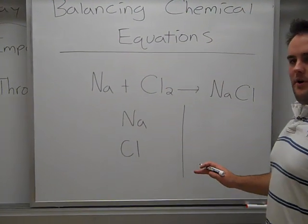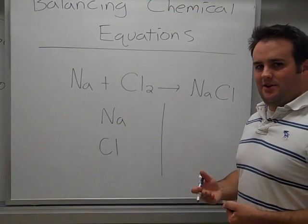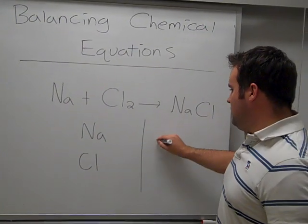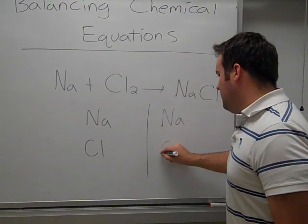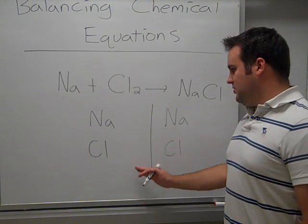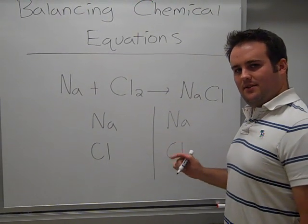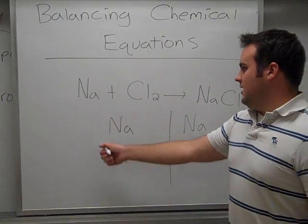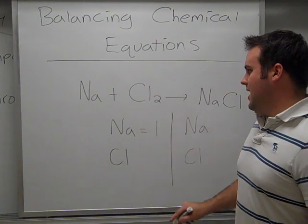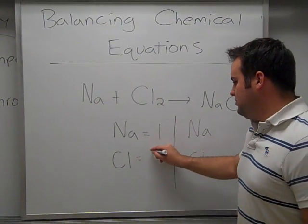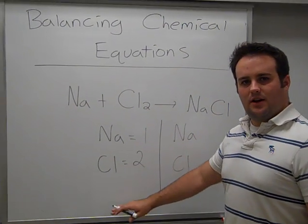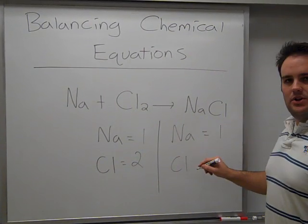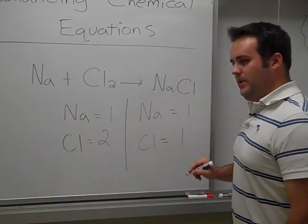Now, one tip for you: going back to that law of conservation of mass, matter can't be created nor destroyed. So whatever types of elements I have on the left side, you can sure bet that they will also be on the right side. Make sure you list them out in order. I'm going to count out how much of each element I have. We have one sodium atom and two chlorine atoms on the reactant side. On this side, we have one sodium atom and one chlorine atom.